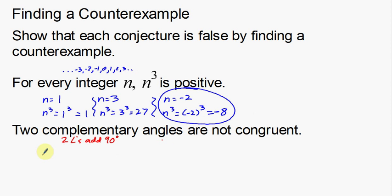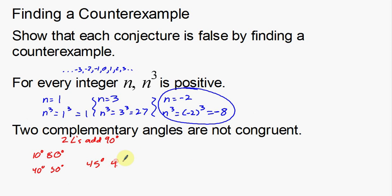Let's go over some examples. Two angles that add up to 90: 10 degrees and 80 degrees — those are complementary but not congruent, so that actually supports the statement. Let's try to find some that are congruent. 40 degrees and 50 degrees are close but not congruent. How about 45 degrees and 45 degrees? These two are the same — they are congruent — and they add up to 90 degrees, so they are complementary angles. Right there is my counterexample to this statement.